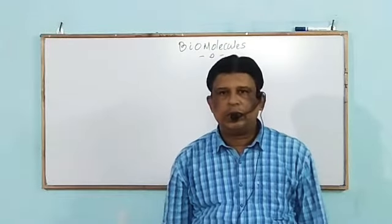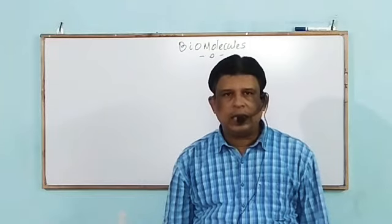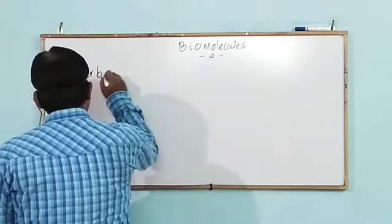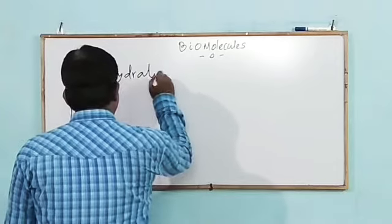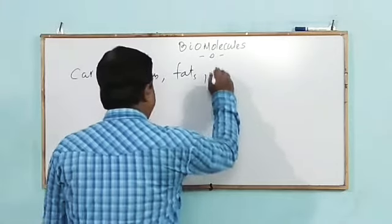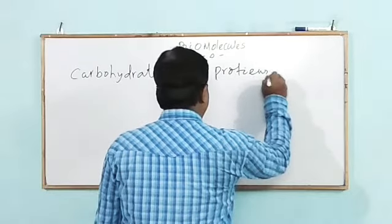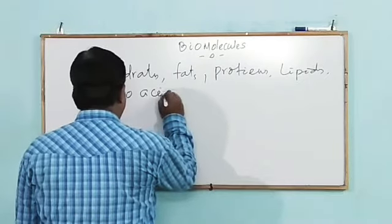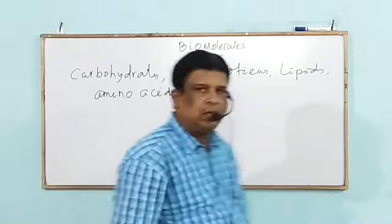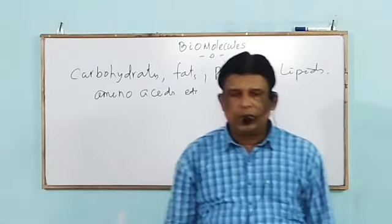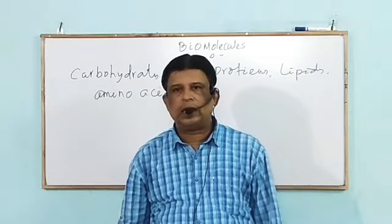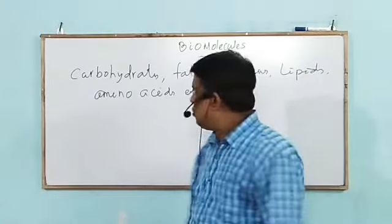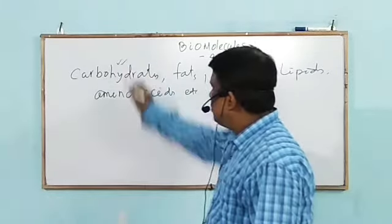The important biomolecules constituting the ultimate structure of living cells are carbohydrates, fats, protein, lipids, amino acids, etc. So we will discuss one by one, and first we will proceed to carbohydrates.